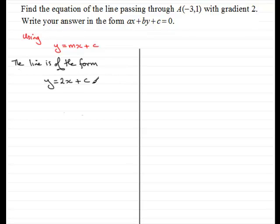Now we don't know the Y intercept, so we've got to work it out. And to do that, what we know is that the line goes through this particular point A with coordinates minus 3, 1. So when any graph goes through a particular point, we know that that point satisfies the equation.